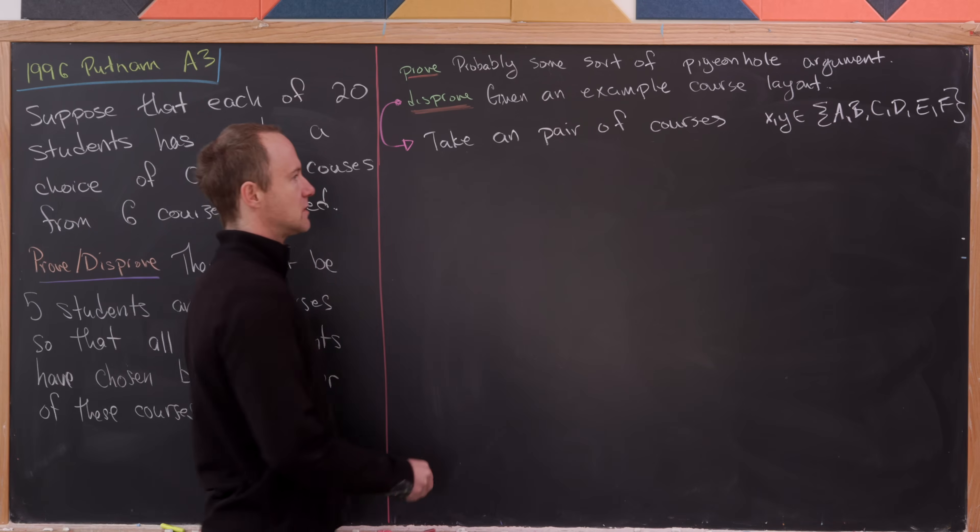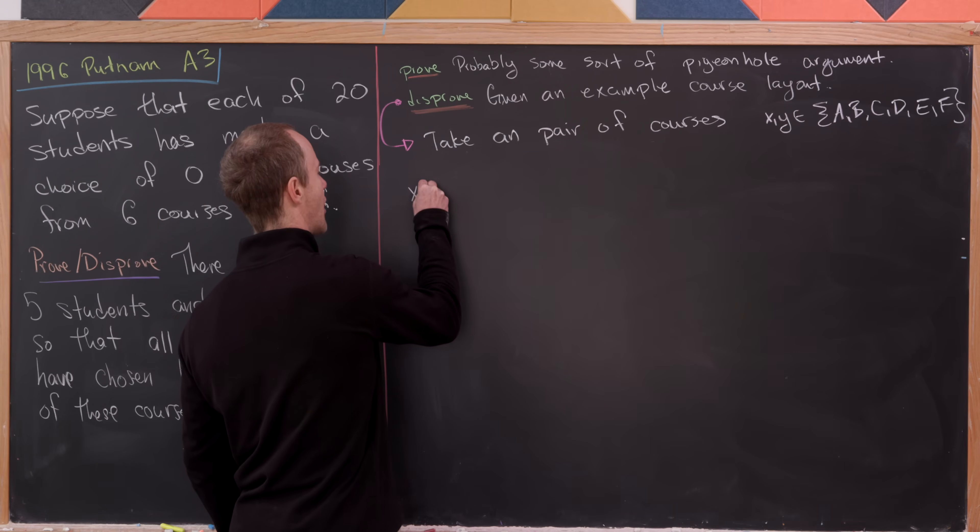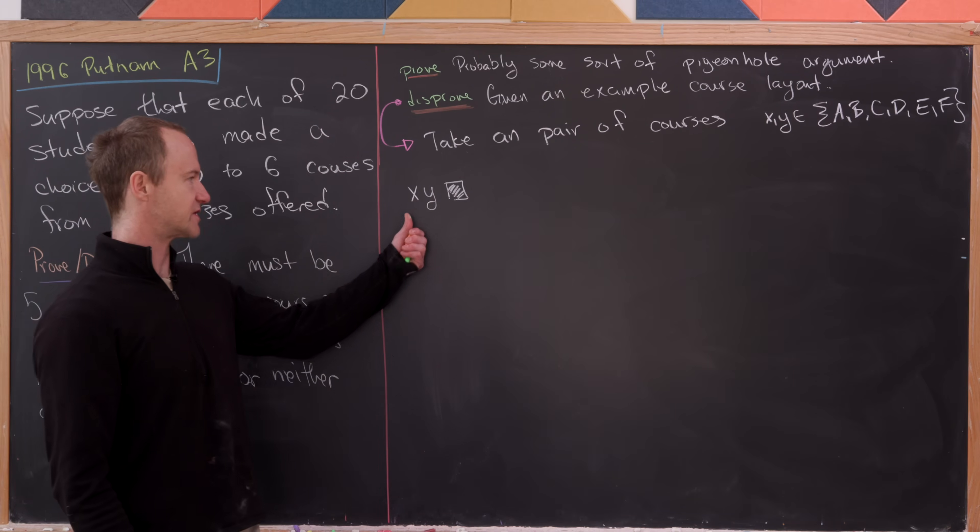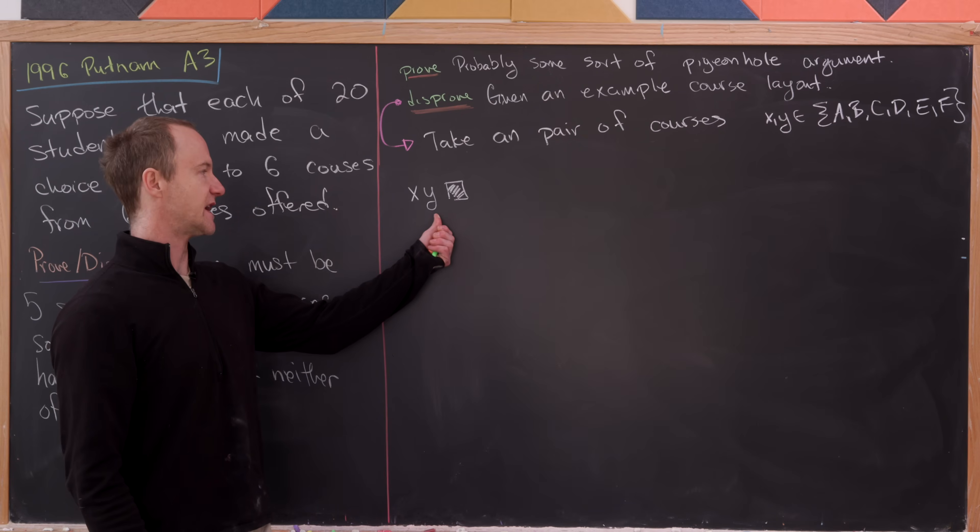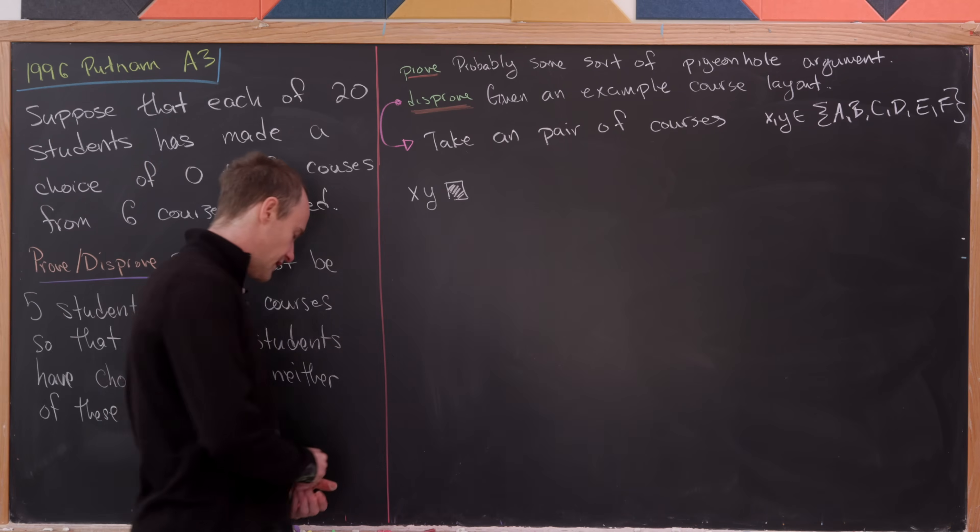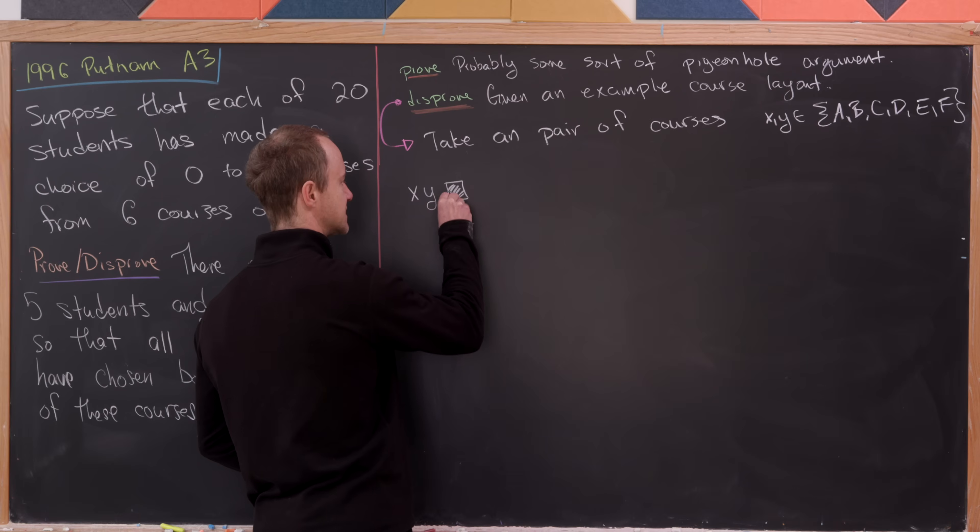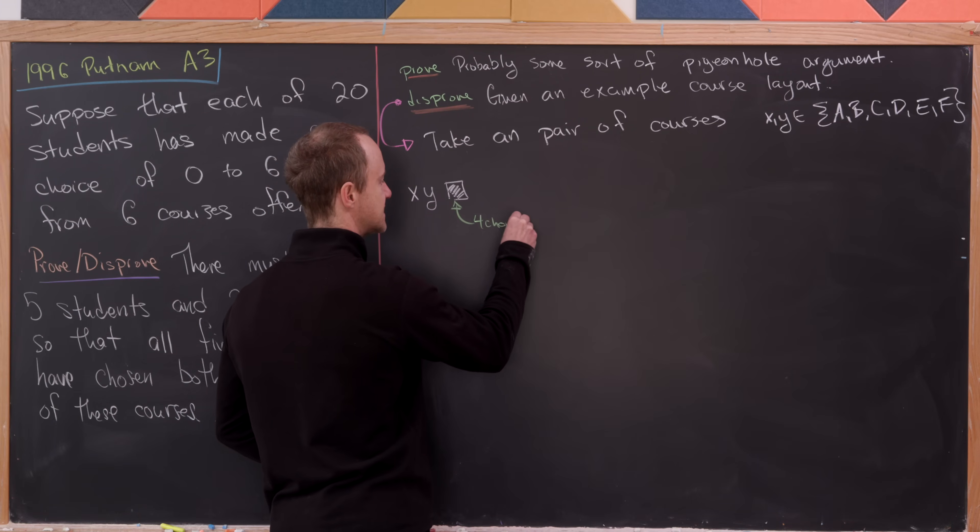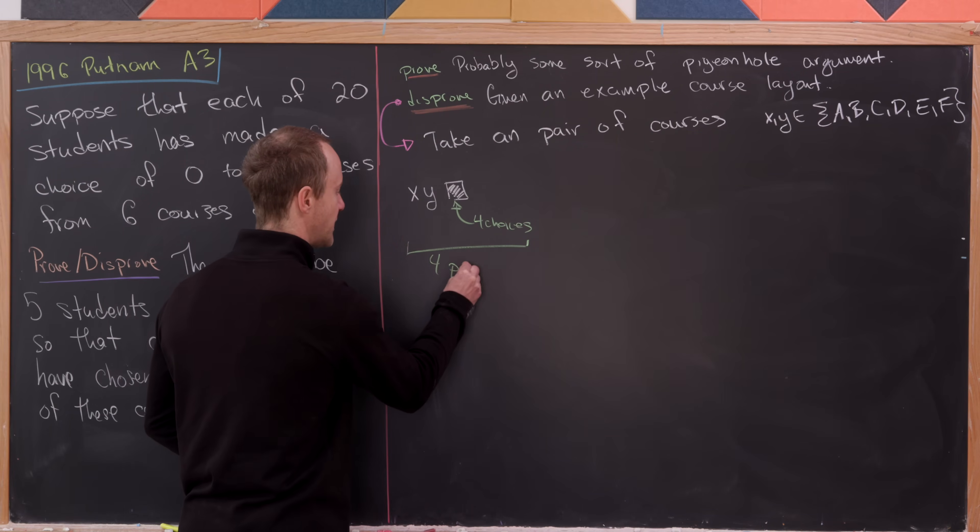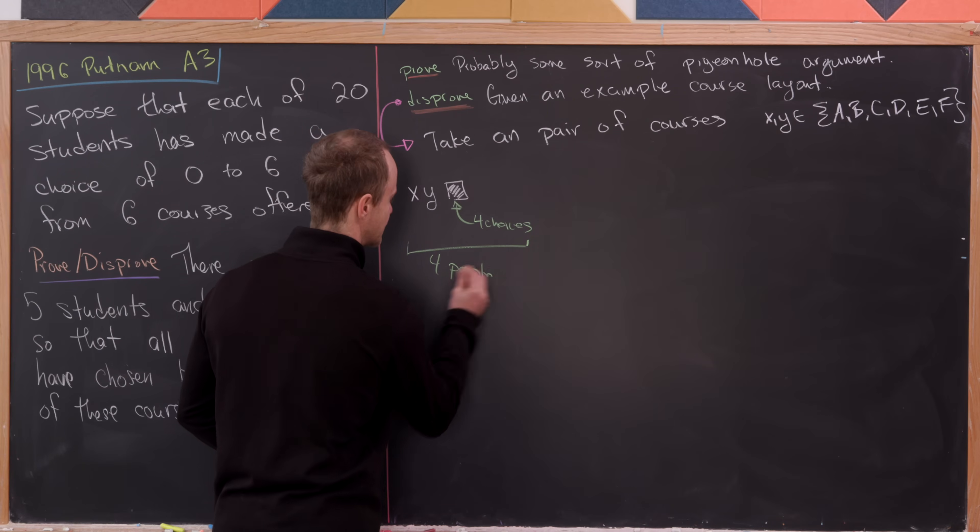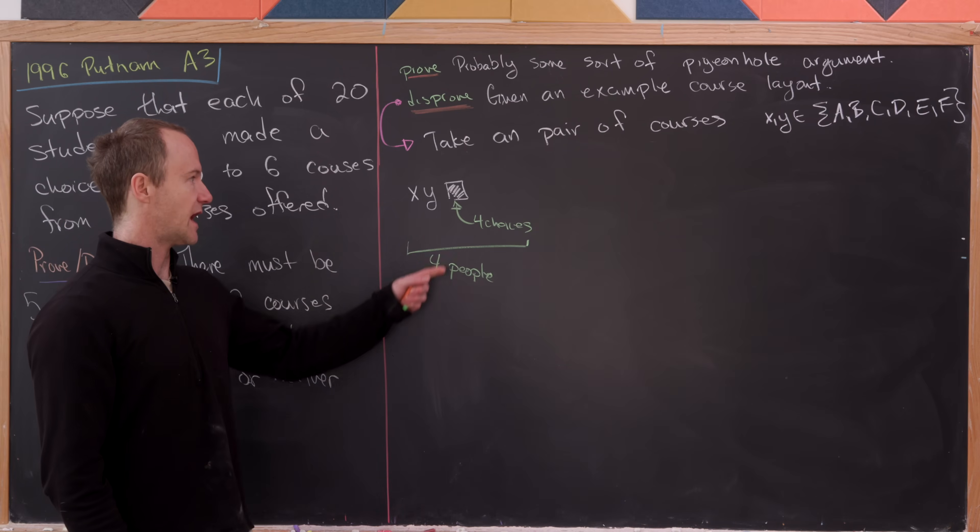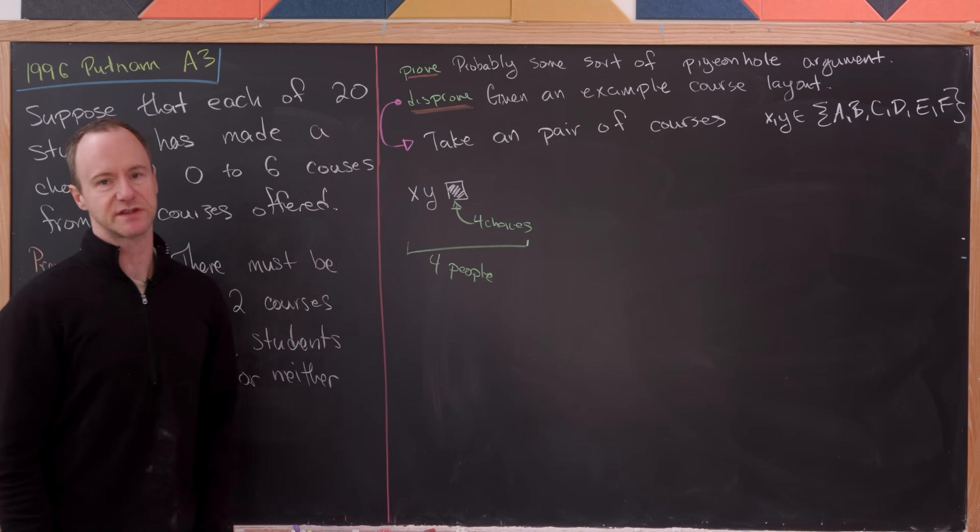And now let's observe that we can count up how many people have this schedule right here. So by this schedule right here, they're taking course X, they're taking course Y, and they're taking some other course. But this is a fairly easy thing to count up because notice there are four choices for this remaining choice. Meaning that there are four people with this type of schedule.